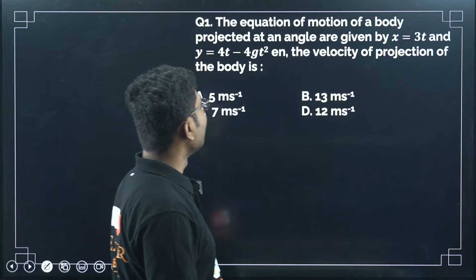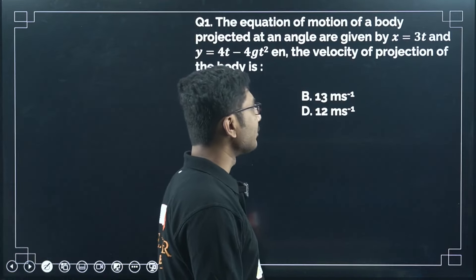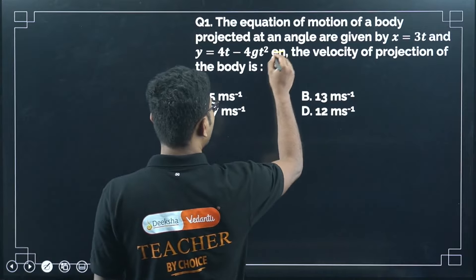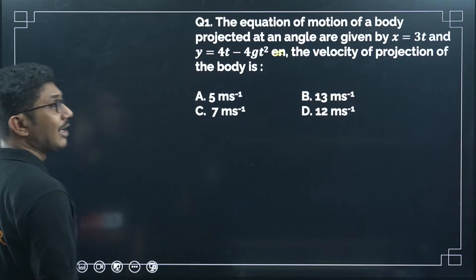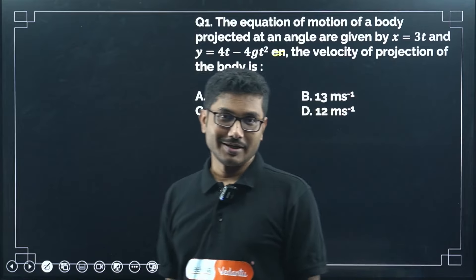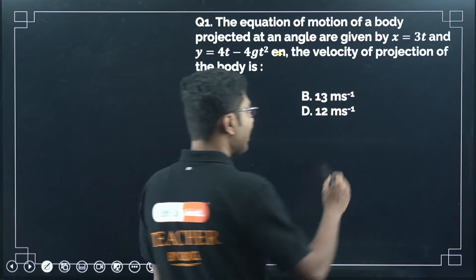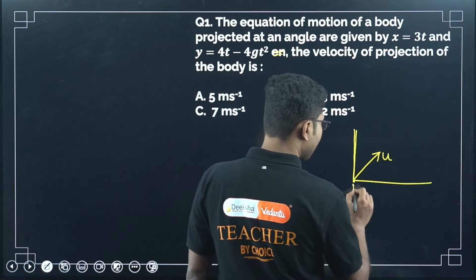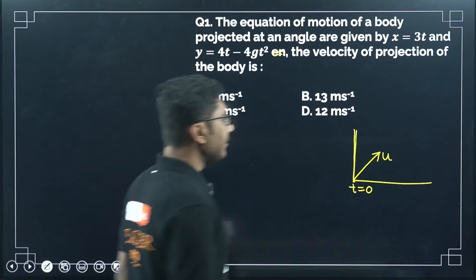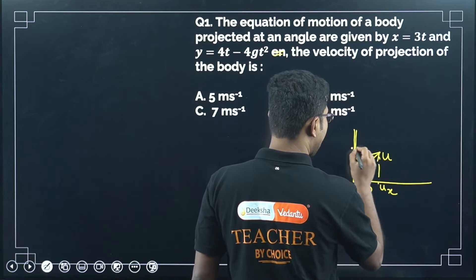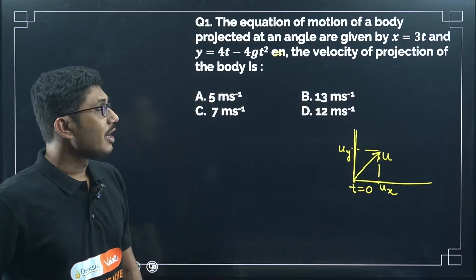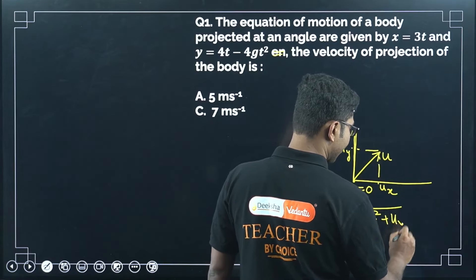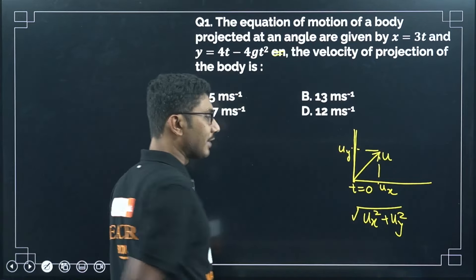First question: the equations of motion of a body projected at an angle are given by x equals 3t and y equals 4t minus 4gt². The velocity of projection of the body is to be calculated. At the initial moment, time was zero. If we calculate the x and y components at t=0, we can find the projection velocity u using the formula √(ux² + uy²), since they are perpendicular to each other.